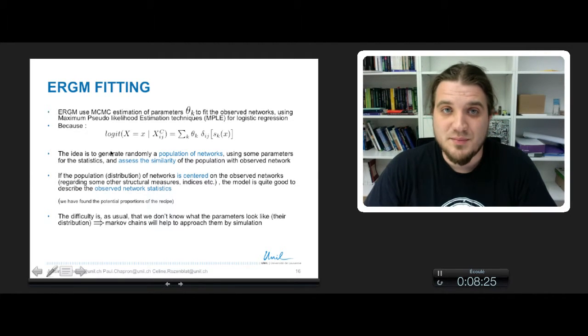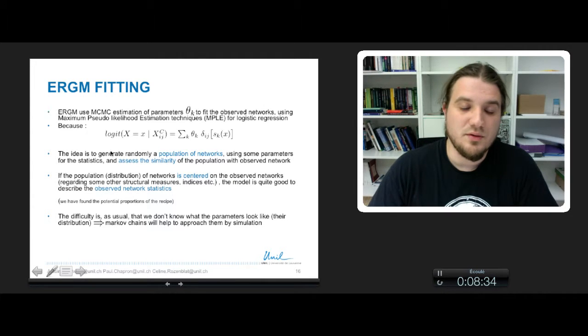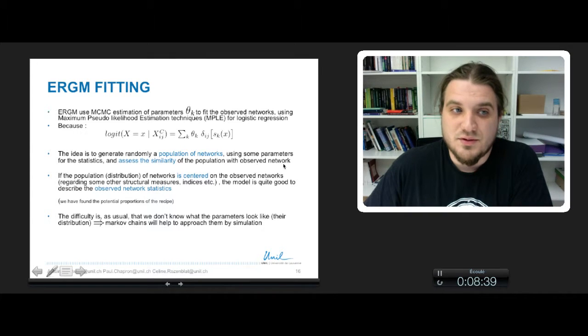The idea behind this regression is to generate randomly a population of networks by using some parameters drawn at random, sampled at random, and assess the similarity of this population of network with the observed network.